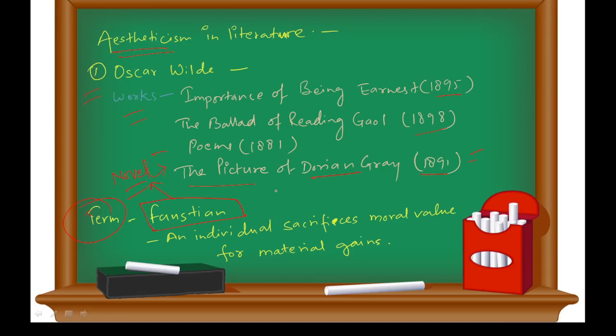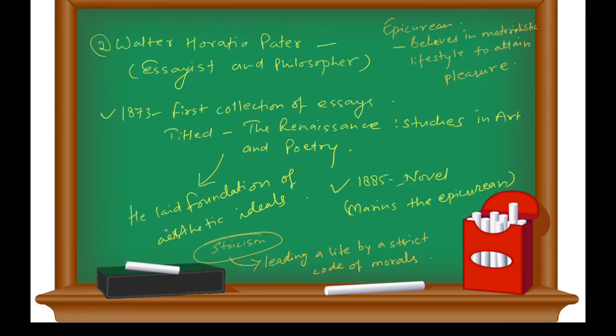In this novel there is a term 'Faustian'. This term is related to The Picture of Dorian Gray. What is Faustian? An individual who sacrifices moral values for material gains. That person is called Faustian. If you want to remember this for a long time, you can think of a person who doesn't have moral values but seeks materialistic things all the time.